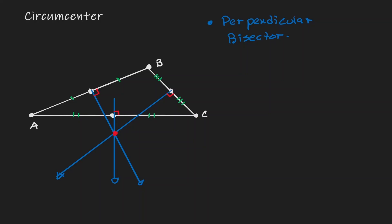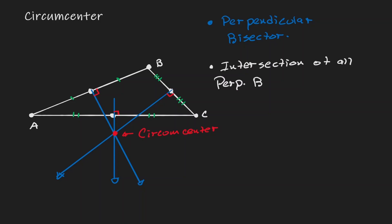In this case, the intersection happened to be outside the triangle. This point of intersection is what we define as the circumcenter of a triangle — the intersection of all perpendicular bisectors of a triangle.